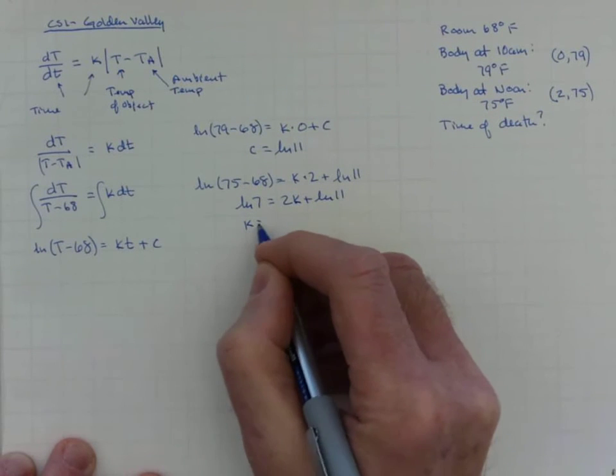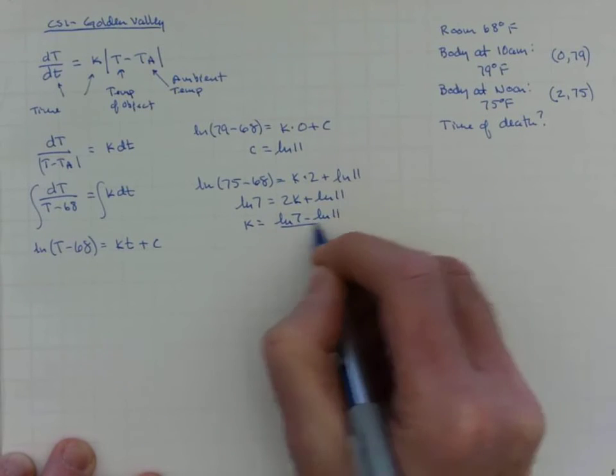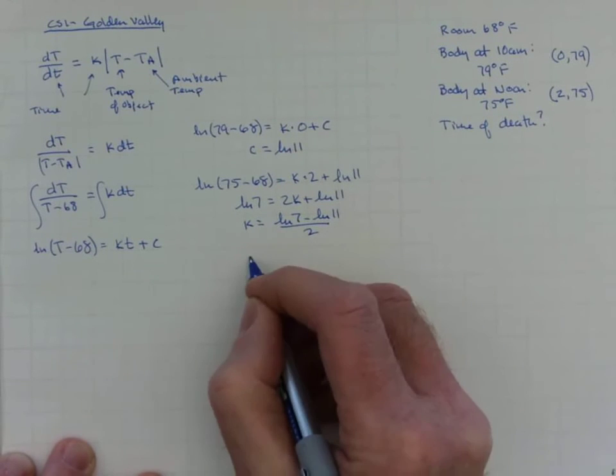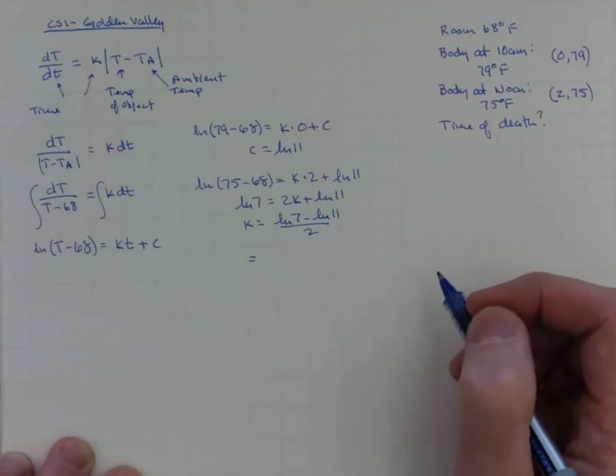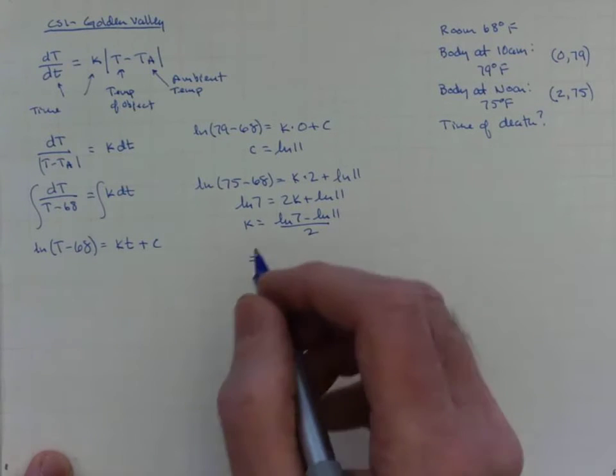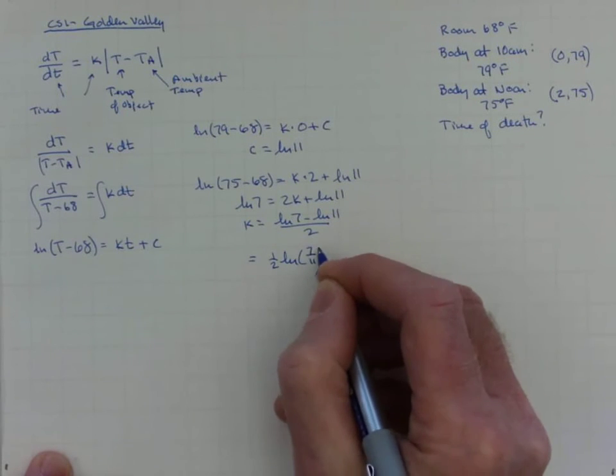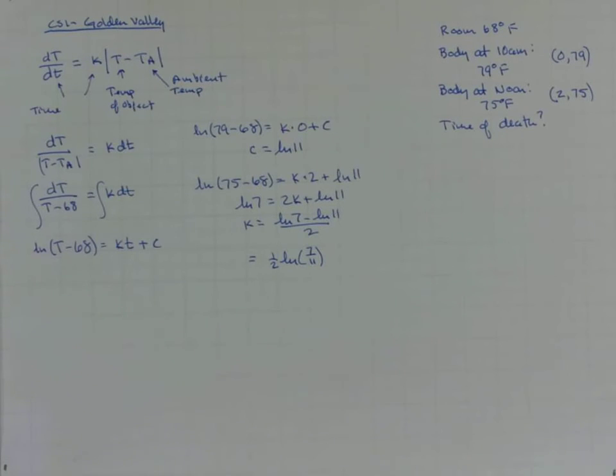So k is (ln 7 - ln 11) all over 2. If we're showing off our log skills and if we don't want to write more than is necessary as we go forward using this constant, this is just going to be (1/2) ln(7/11). If we really wanted to show off, we could introduce some kind of square root interpretation of that 1/2, but this should serve our purposes.